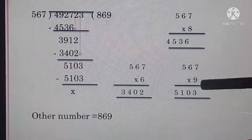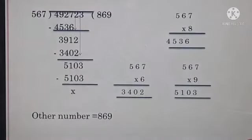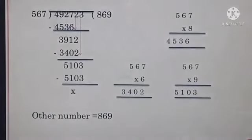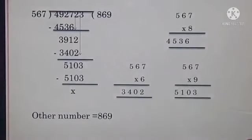567 nines are 5,103. Divided completely, so remainder is 0. So the other number is 869. It was asked in your question to find out the other number. Clear?